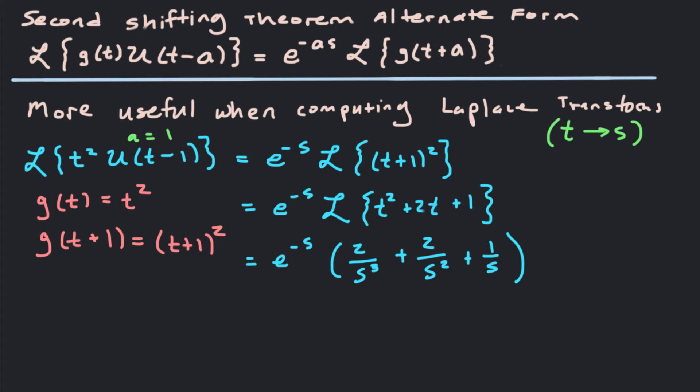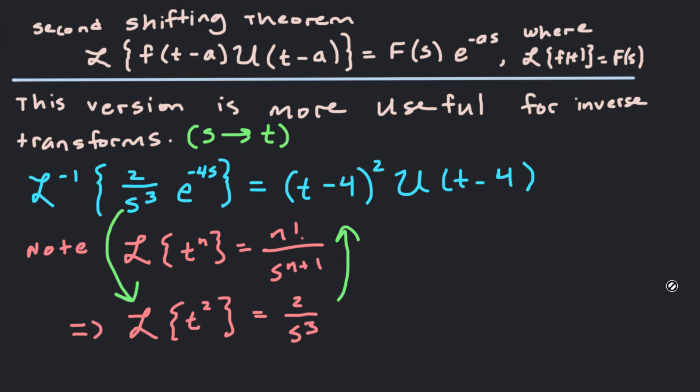Looking back: the alternate form is more useful for taking transforms from t to s, while the first form is more useful for taking inverse transforms from s to t. Both parts of the second translation theorem are extremely useful for solving differential equations. Being comfortable in both directions is very important because the forcing function on the right-hand side of a differential equation may be a piecewise function, so we use the shifting theorem to take the Laplace transform and then the inverse Laplace transform when we get the solution.